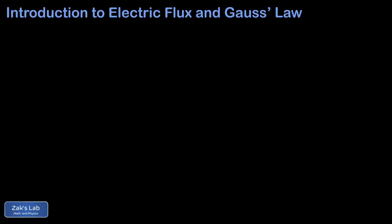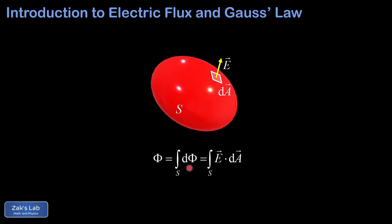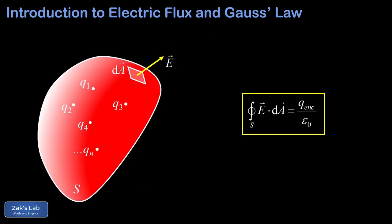In this video, we're going to quickly introduce the idea of electric flux, why it's defined the way it is and how to compute it. Then we're going to look at the electric flux through closed surfaces and derive Gauss's law, which says that the flux through a closed surface depends only on the charge contained within that surface, no matter the size or shape of the surface.